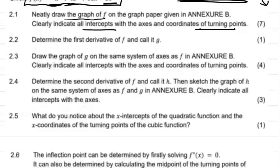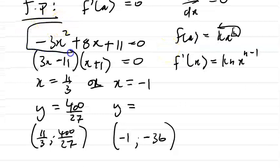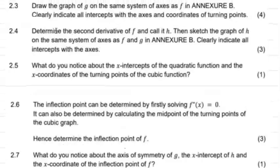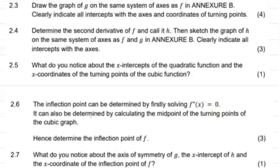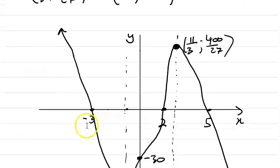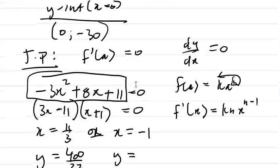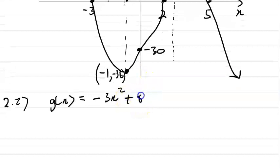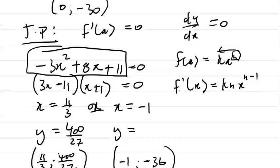Now for question 2.2 — they want the first derivative of f, called g. We already found it for the turning points. So g(x) = -3x² + 8x + 11. Notice that the first derivative of a cubic function gives us a quadratic — a parabola. And the derivative of a parabola gives a straight line.